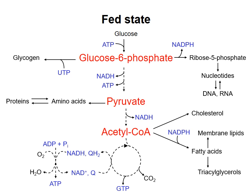As glucose is used for these purposes, its level in the blood will start to fall. As blood glucose drops, insulin will be cleared from the bloodstream. Because glucose is ordinarily the brain's preferred source of fuel, the body does not want blood glucose to fall below a level of about 4-5 millimolar. As this level is approached, the amount of the hormone glucagon in the blood will increase, and this will impact our metabolic pathways.